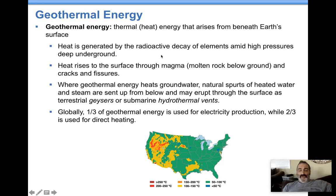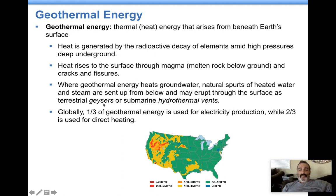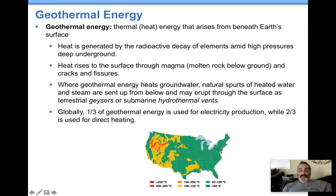Radioactive decay of elements naturally creates heat underground. Groundwater also gets heated, and then that groundwater can come up and be used. That heat rises through magma and comes up through cracks and fissures in rocks. This is similar to hydrothermal vents at the bottom of the ocean, where heat comes through those vents, and geysers produce steam and hot water.